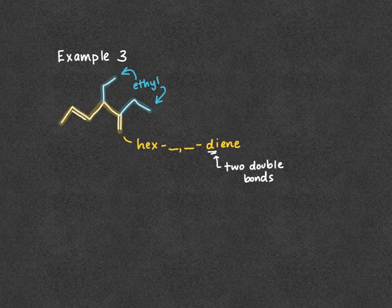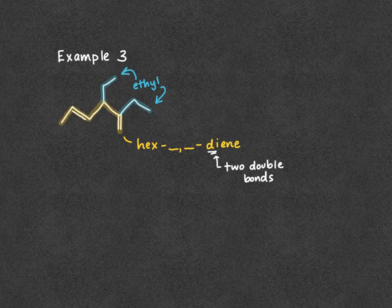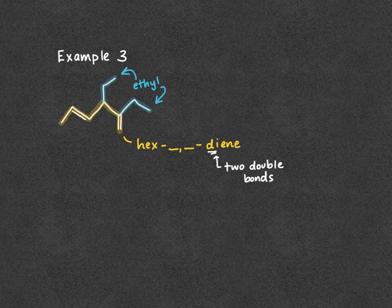Next, I'm going to number my molecule. With two double bonds, I want the lowest number assigned to one of them. Going from left to right, my first double bond is on carbon 2 and my second is on carbon 5 — so 2 and 5. Going from right to left, the double bonds fall on carbons 1 and 4. So I'm going to number from right to left, giving the set 1 and 4, which is lower.